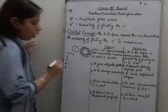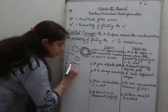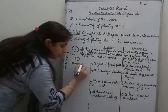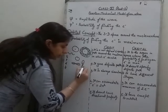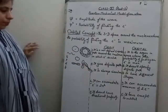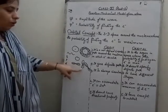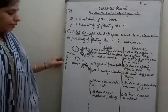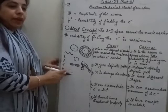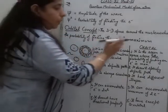The shape of the s orbital is spherically symmetrical. The shape of the p orbital is dumbbell-shaped along the x, y, and z axes respectively. In this orbital, the probability of finding the electron is maximum along each axis. For d orbitals and f orbitals, the shapes are double dumbbell shapes.